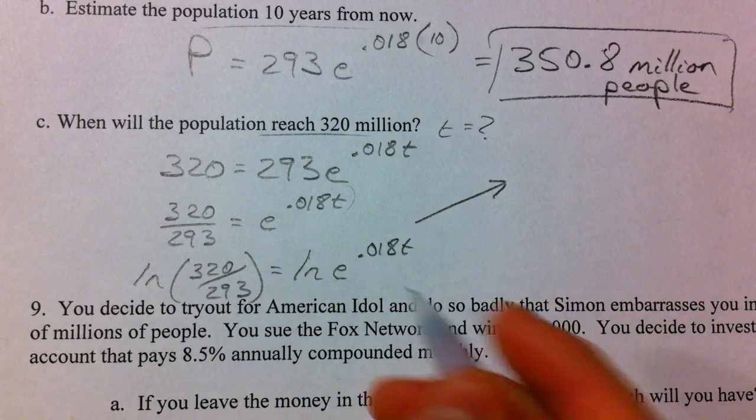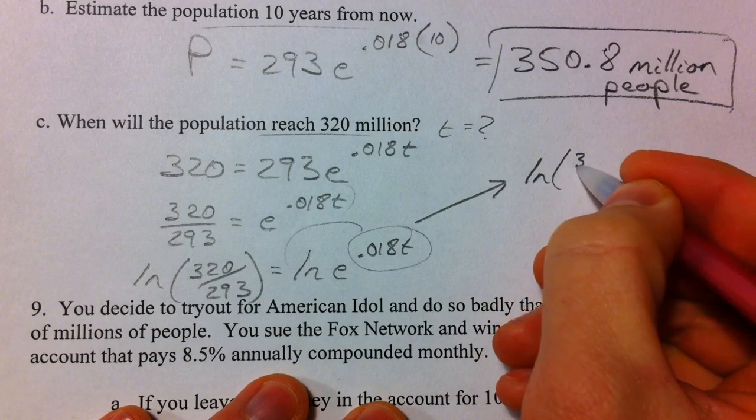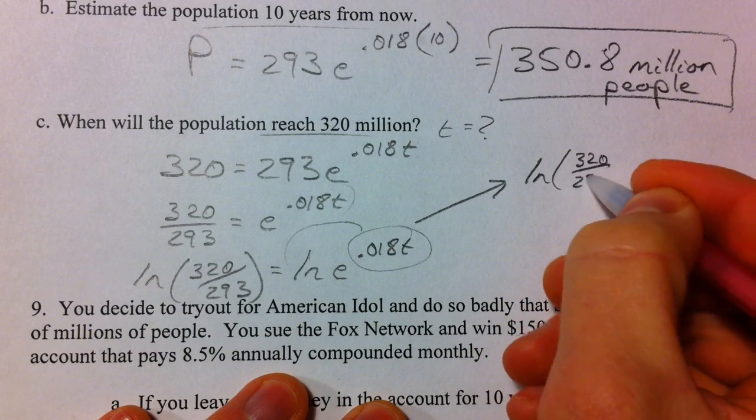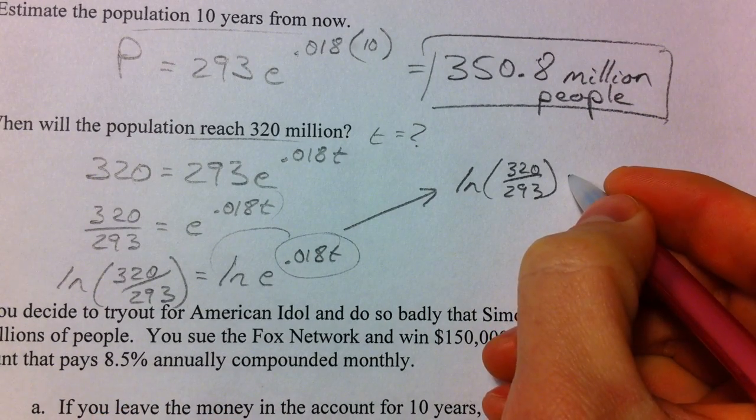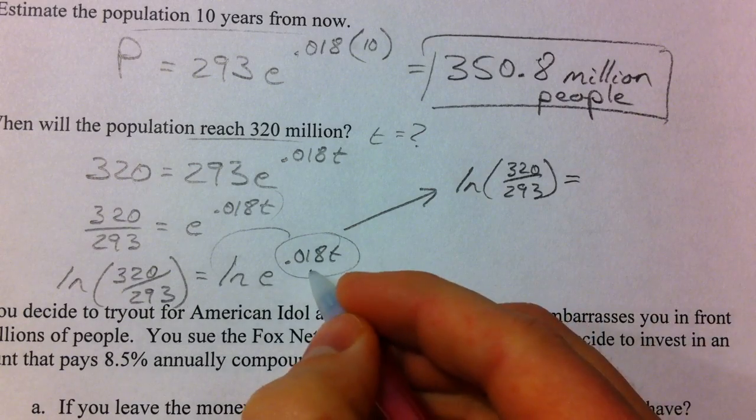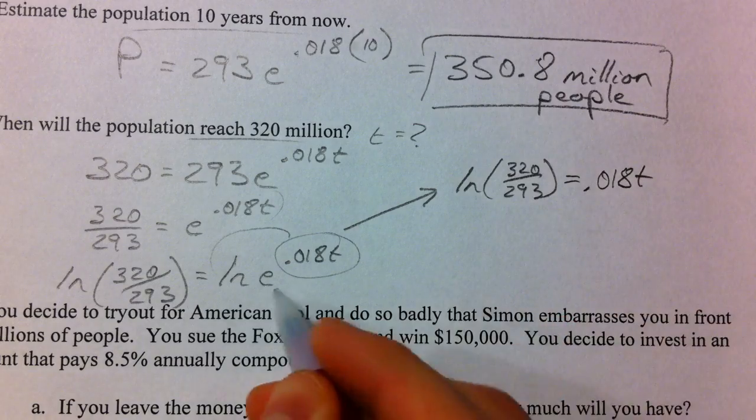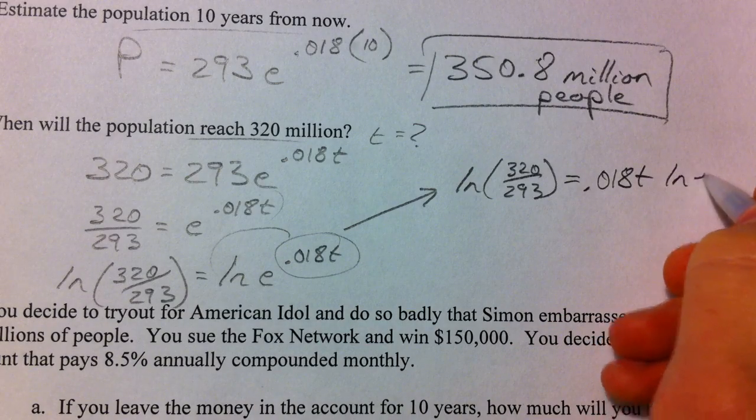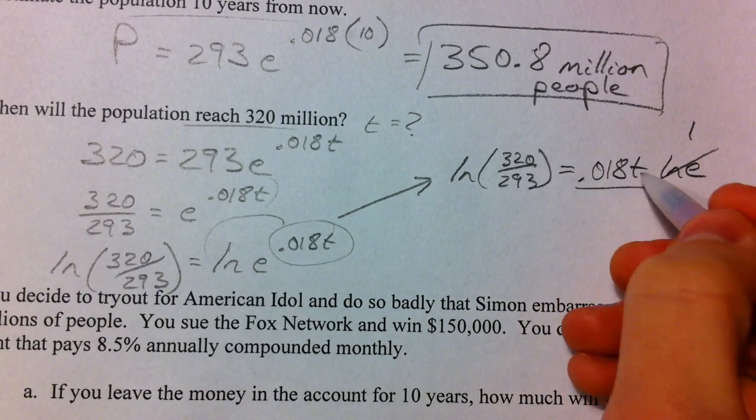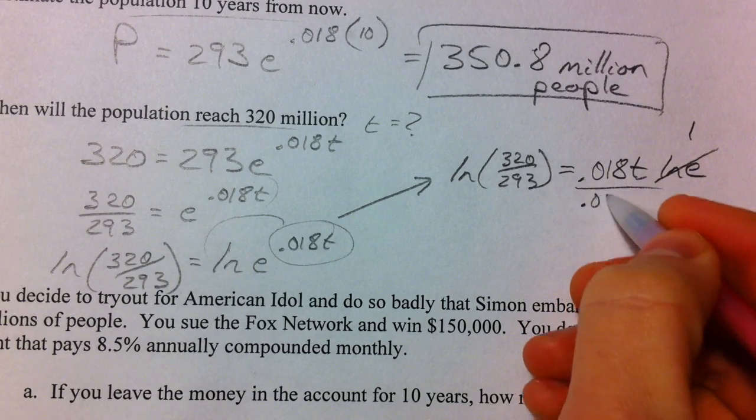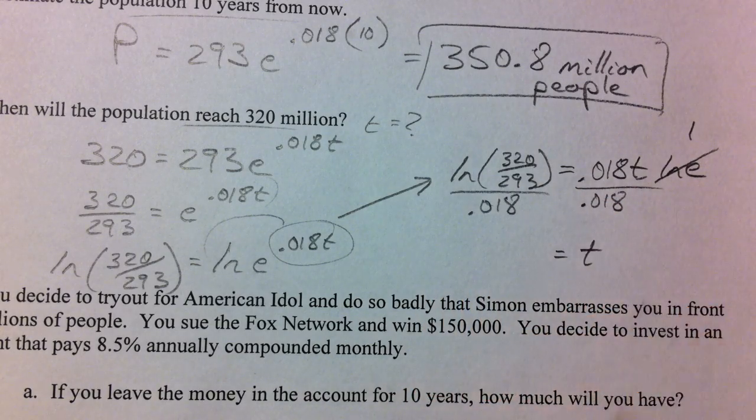Moving that over here. Whole reason we did that was so that that would come down. Natural log of 320 divided by 293. And that's just because I don't want to type that into the calculator quite yet because it'll probably be a decimal. So we've got 0.018T times the natural log of E. Natural log of E is just 1 and so it cancels out.